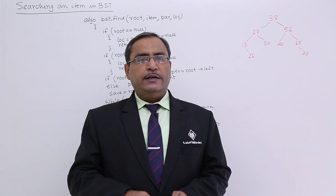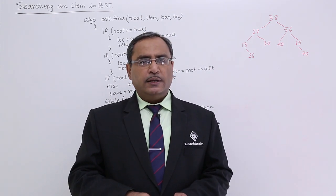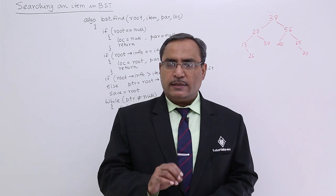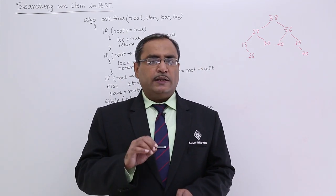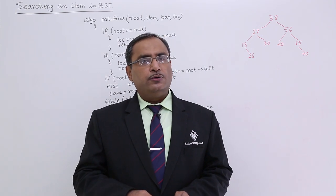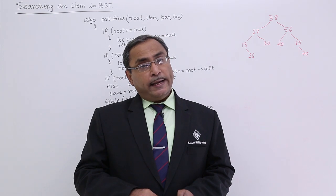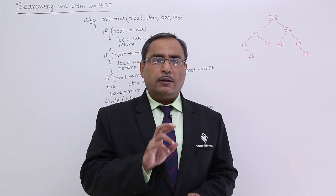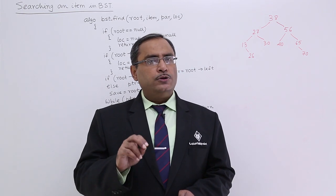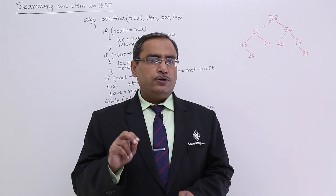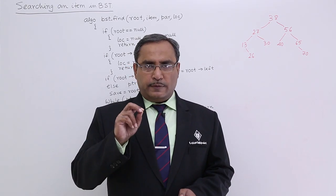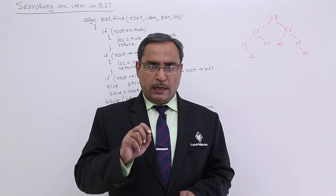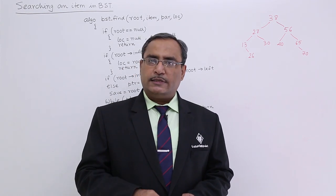If the tree does not exist, then lock will be null and par will be null. If the data item is found at the root node, lock will equal root and par will equal null, because the root node cannot have any parent. But if the search item is found in any node other than the root, then both par and lock will be non-null, containing their respective node addresses.